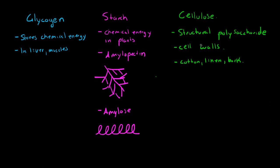For cellulose, it is a structural polysaccharide used in cell walls, cotton, linen, and bark. It is very rigid and doesn't break down easily.